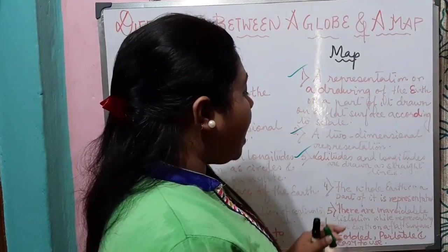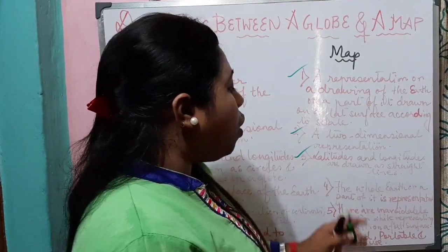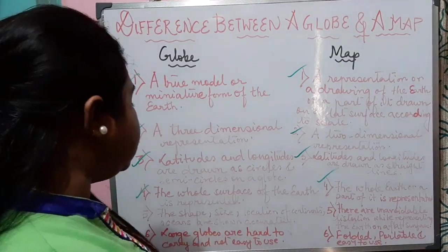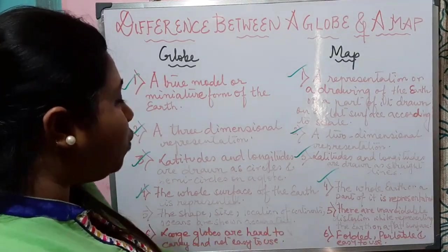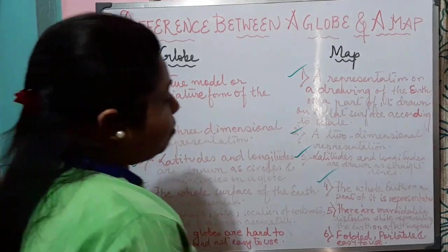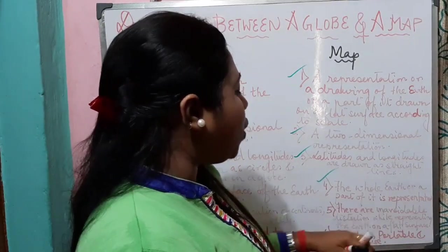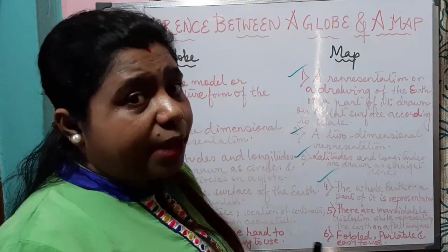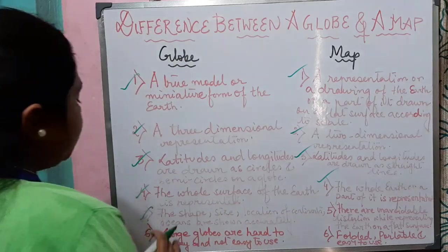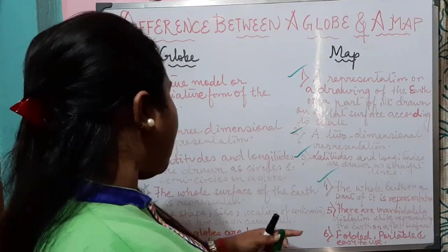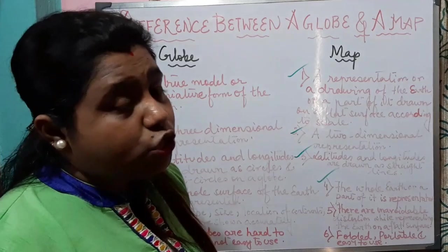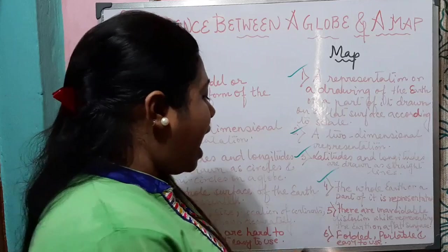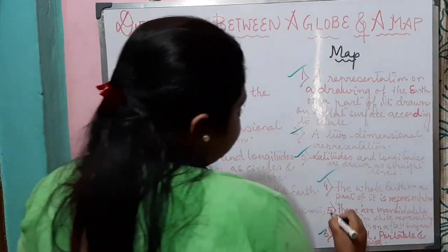On a map, latitudes and longitudes are drawn as straight lines. The whole surface of the Earth is represented on a globe, while on a map the whole Earth or a part of it is represented. The shape, size, and location of continents and oceans are shown accurately on a globe, whereas maps have some unavoidable distortions. Large globes are hard to carry, while maps can be folded and are portable and easy to use.